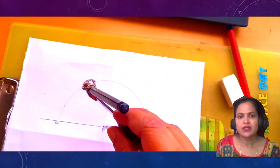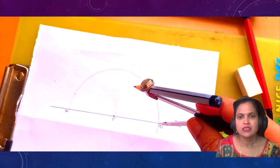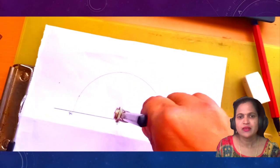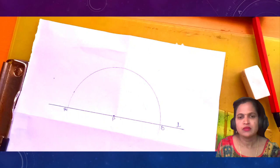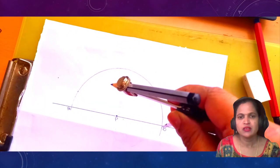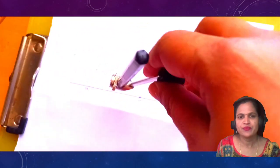Take your compass. It should be more than radius. The length should be more than P, B or A, P.